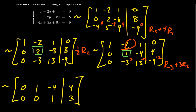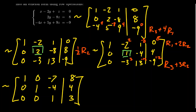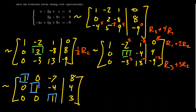I can get a 0 above the leading 1 in column 2 by replacing row 1 with row 1 plus 2 times row 2. Since row 2's first entry is 0, the first column entry stays 1. Then -2+2=0, 1-8=-7, and 0+8=8. The first column is now [1,0,0] and the second column is [0,1,0] — I'm producing a staircase of 1s. To achieve full row-reduced echelon form, I replace row 2 with row 2 plus 4 times row 3, and replace row 1 with row 1 plus 7 times row 3.